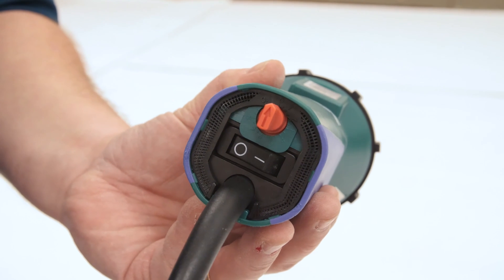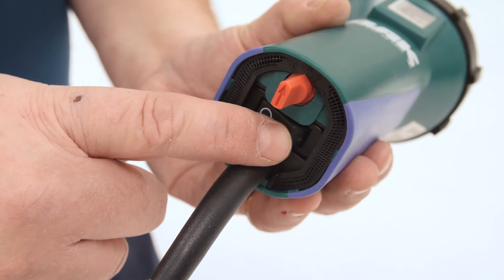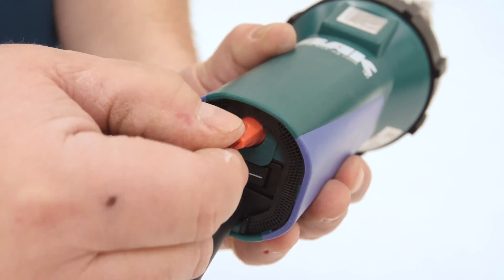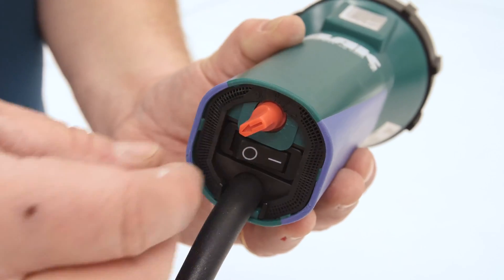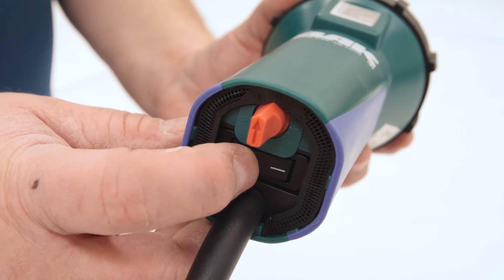Generally, heat guns have two switches: a fan switch and an element or heat switch. Always turn on the fan first, then the heat. When shutting down, first turn off the heat until the element cools, then turn off the fan. Failure to shut down in this sequence could cause premature element failure.